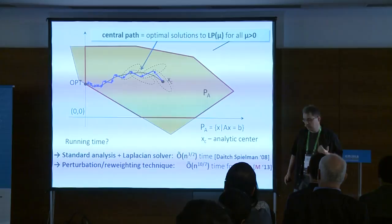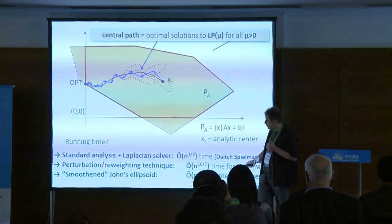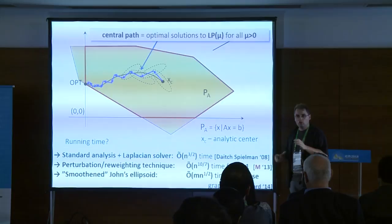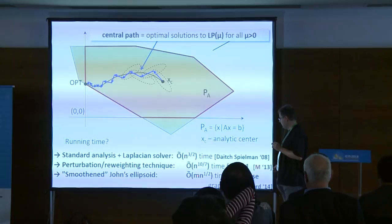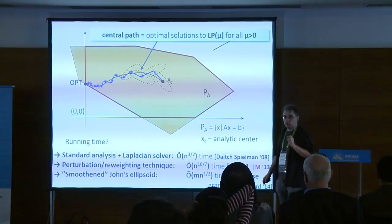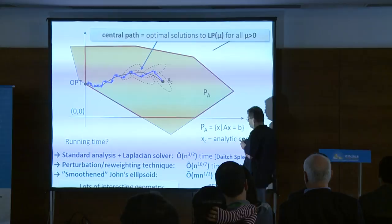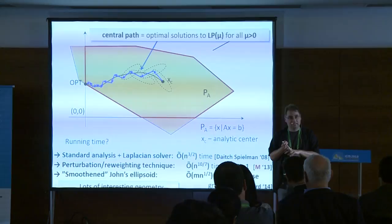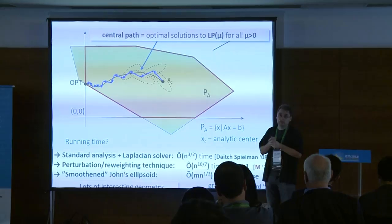I also want to note that Lee and Sidford later used similar methodology but pushed it in a different direction. They used something called the Smooth and John's ellipsoid to get better dependence on n versus m. For sparse graphs this is still n-to-the-three-halves, but for dense graphs the overhead is only square root of n instead of square root of m. There is very interesting math here — dynamical systems on one side, geometry on the other, and a very nice interplay. I'm happy to talk more about it after the talk; there are some very interesting open questions there.